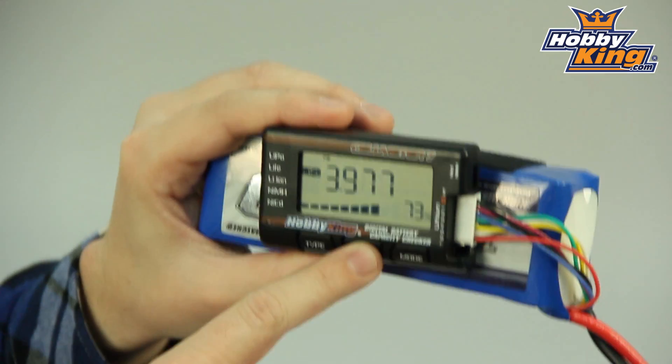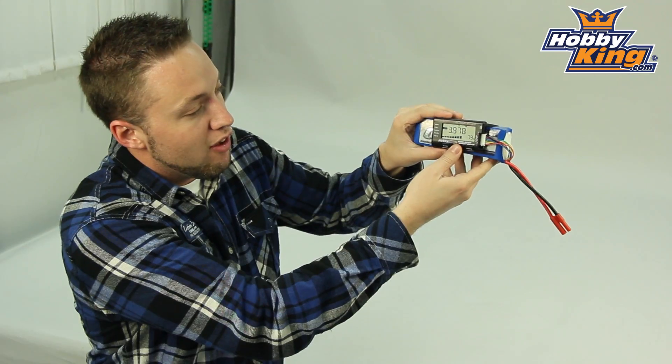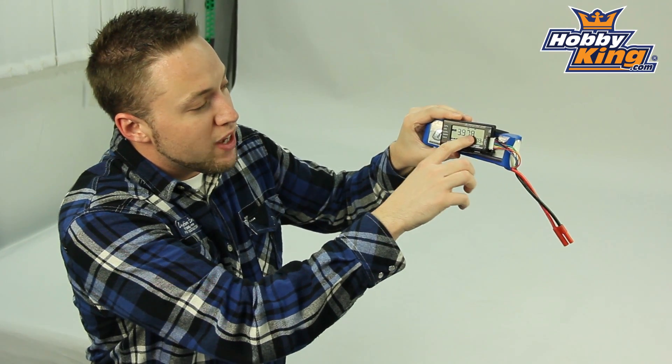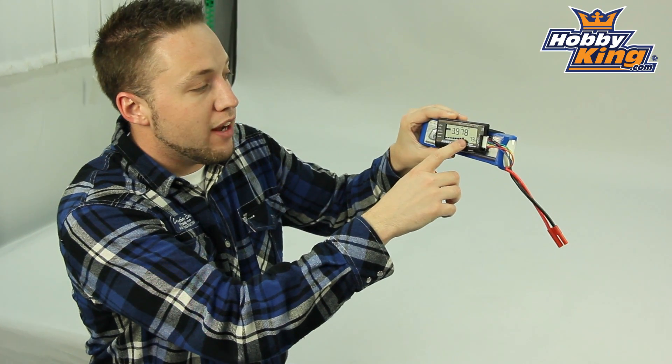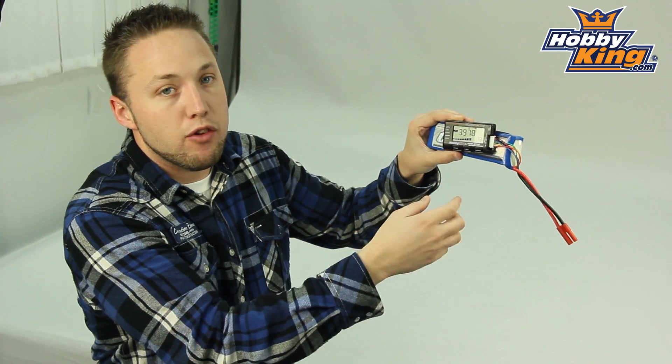And when you go into the modes here, you'll be able to check the individual cell voltages. This reads all the way to one hundredth of a volt. So quite accurate and gives you a good idea, very accurate reading of your individual cell voltages.